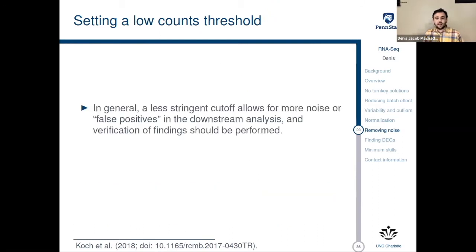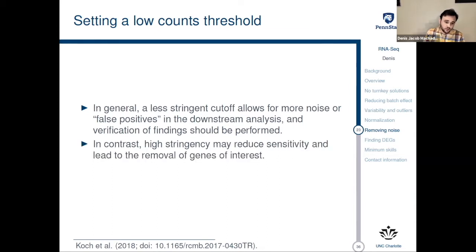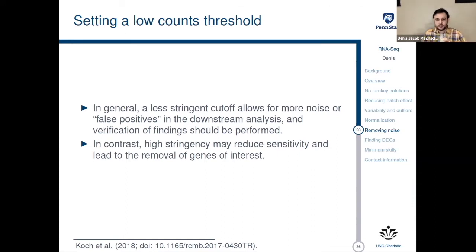In general, a less stringent cutoff allows for more noise or false positives in the downstream analysis and verification of findings should be performed. In contrast, high stringency may reduce sensitivity and lead to the removal of genes of interest.